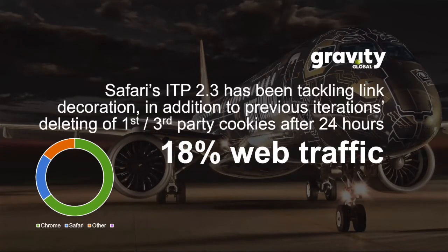Why is that such a big deal? Because Chrome accounts for 65% of all web traffic. They now join Safari — Safari have been battling third-party cookies and cross-site tracking for the last few years with their Intelligent Tracking Prevention protocol, and that accounts for 18% of web traffic. So we're now in the high majority of all web traffic that won't be visible by third-party cookies.